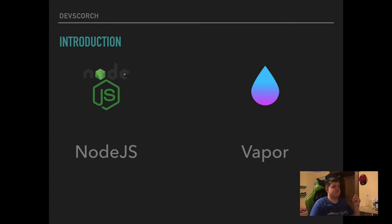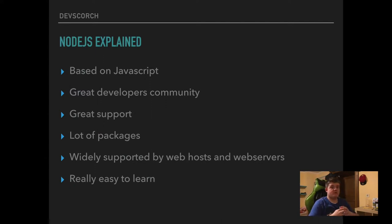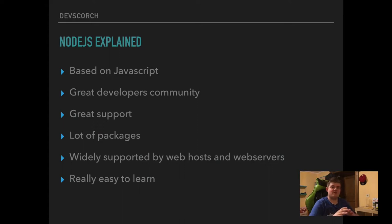So, introduction to Node.js. Node.js is based on JavaScript. JavaScript is a programming language — it's officially a front-end language, executed by the browser. There is a great developers community. Node.js really has a big developers community with thousands of people using it. It's really powerful and because of that it also has really great support. There's nothing you do in Node.js that somebody can't help you with — there's always somebody who can help if you have an issue.